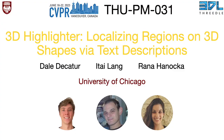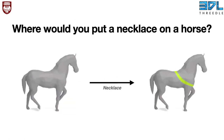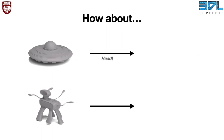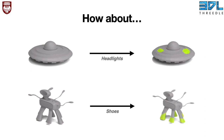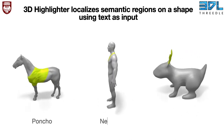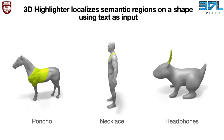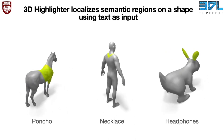We present 3D Highlighter, localizing regions on 3D shapes via text descriptions. Where would you put a necklace on a horse? How about headlights on a UFO or shoes on an alien? More generally, can we localize arbitrary text-specified regions on 3D shapes? In this work, we present a method to do exactly this. 3D Highlighter localizes semantic regions on a shape using text as input.